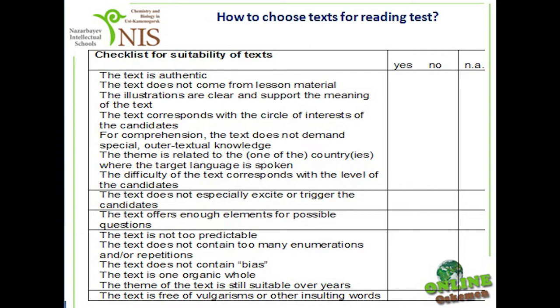The text corresponds with the circle of interest of the candidates — we think so, yes. For comprehension, the text doesn't demand special auto-textual knowledge. The theme is related to one of the countries where the target language is spoken — in this example, it is related to Great Britain. The difficulty of the text corresponds with the level of the candidates; the text level is suitable for grade nine students. The text doesn't especially excite or trigger the candidates — there are no exciting moments. The text offers enough elements for possible questions. The text is not too predictable. The text doesn't contain too many repetitions or enumerations.